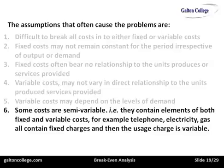Some costs are semi-variable — they contain elements of both fixed and variable. For example, a telephone bill: you've got to pay for the telephone line, that's fixed, but then the more you use the phone, that's variable. The same for electricity: you have to pay for the provision of the electricity to the building, that's fixed, but then the more you use it, that's variable.